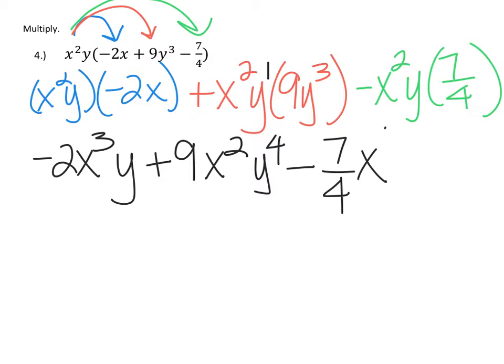We don't have any like terms to combine further because even though all three terms have an x and a y, they have different exponents. The first term has x³ but the others have x². For the second and third terms, they both have x² but different y exponents. To combine terms with adding and subtracting, we need the same variables and exact same exponents. Therefore, this is our final answer.